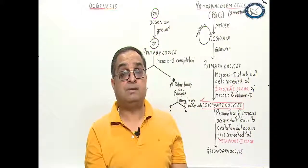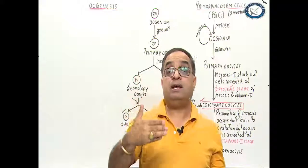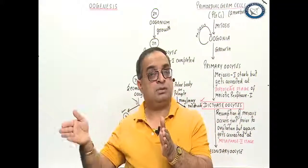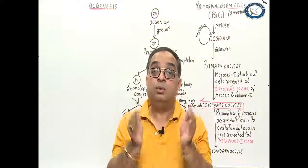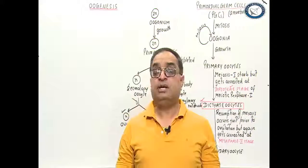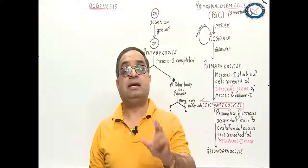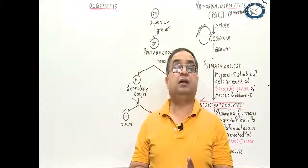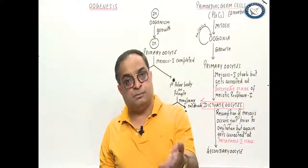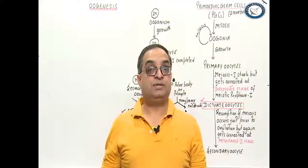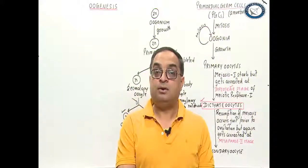The ovum must have more ooplasm because the sperm that enters it contains very little cytoplasm. When the zygote is formed and undergoes cleavage divisions, the daughter cells require nutrition, which comes from the ooplasm of the ovum. So the functional cell gathers more ooplasm as nutrition for forthcoming cleavage divisions. In short, oogenesis is the formation of the female gamete. It starts during intrauterine life, gets arrested, resumes during puberty, gets arrested again at metaphase 2, and is finally completed when the sperm enters the secondary oocyte in the fallopian tube. Thank you.